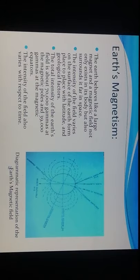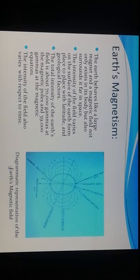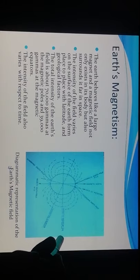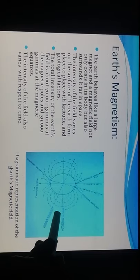The earth behaves like a large magnet, and the magnetic field not only exists in its body but surrounds it far into space. The intensity of the field varies on the surface of the earth from place to place with latitude and geological factors. The total intensity of the earth's field is about 70,000 gammas at the magnetic poles and 39,000 gammas at the magnetic equator. The intensity also varies with respect to time.